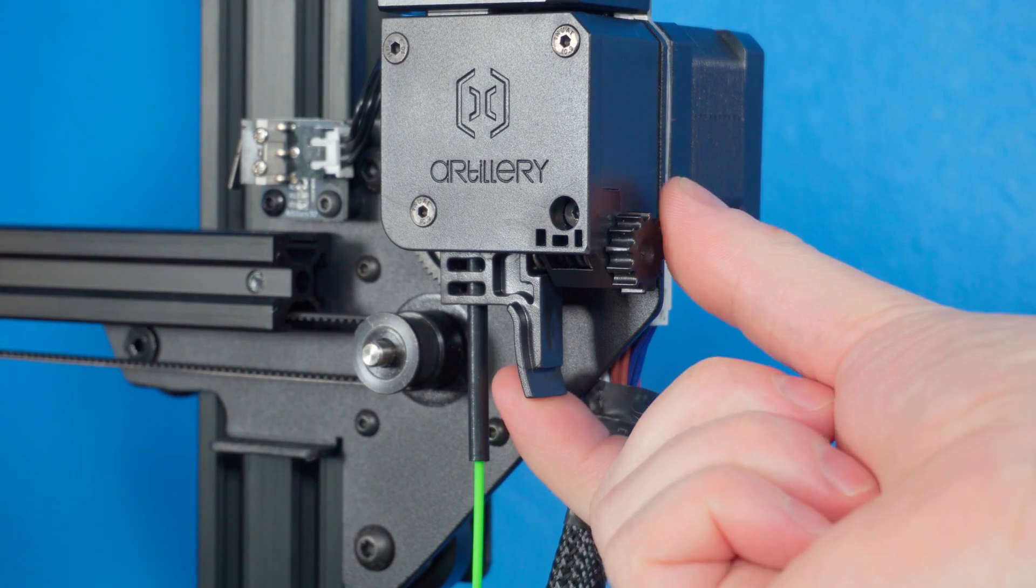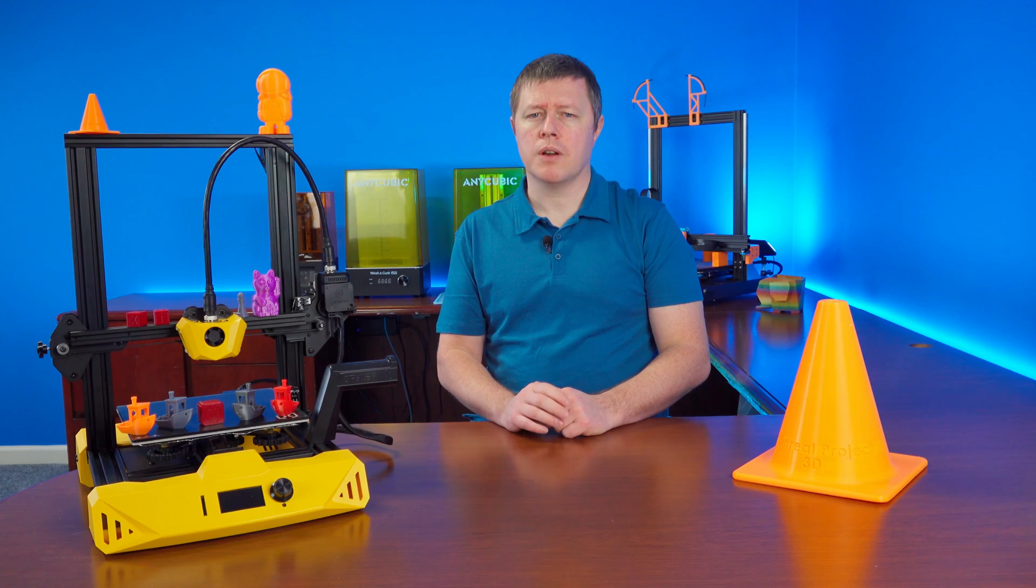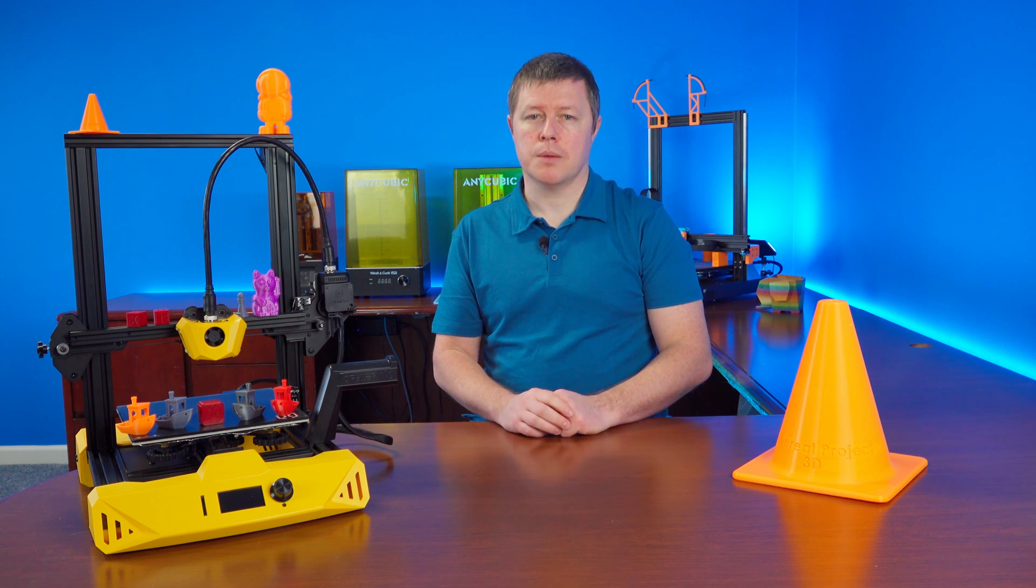The plastic lever arm in the extruder really should be metal. It's a part that's easy to break if you're not careful and should be upgraded in the future. Stay tuned for a how-to video for that exact upgrade.